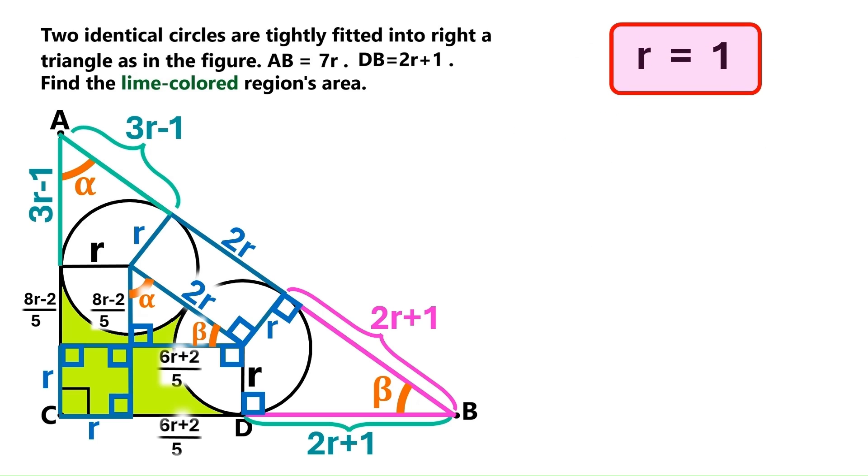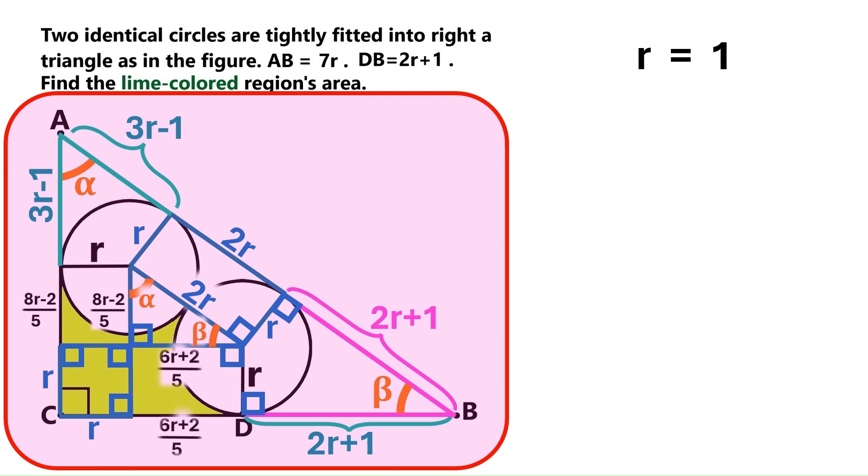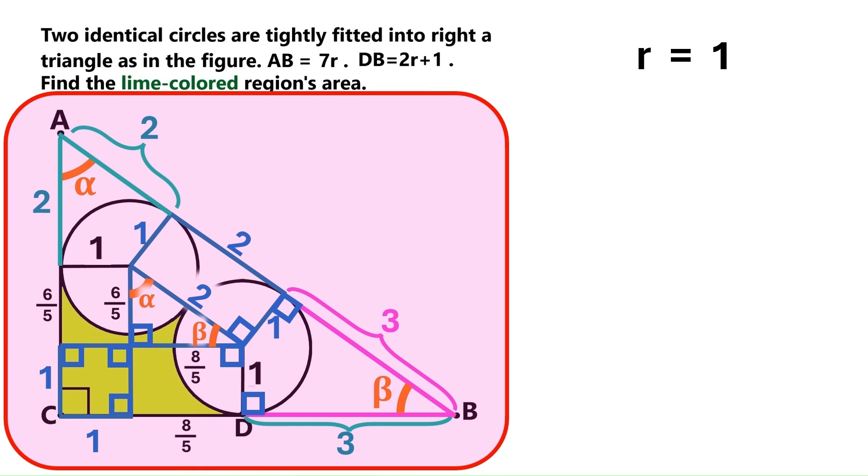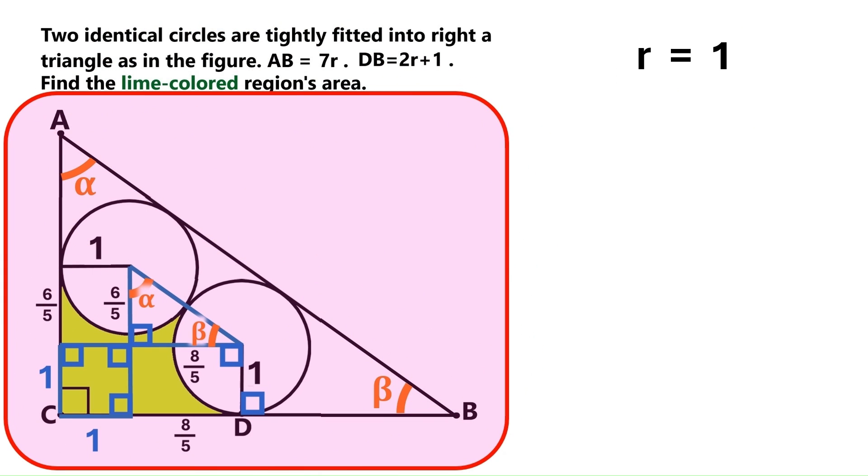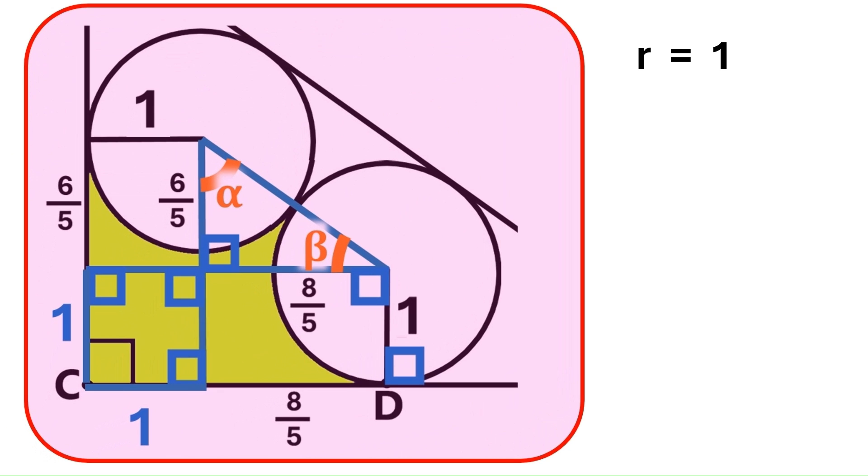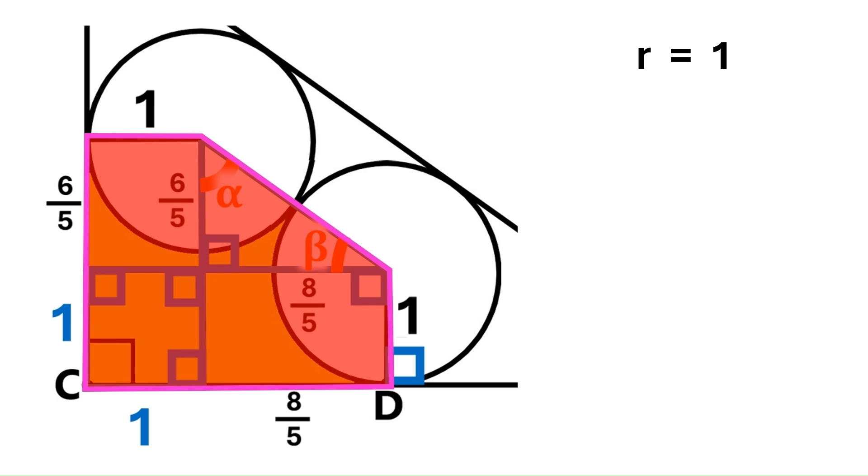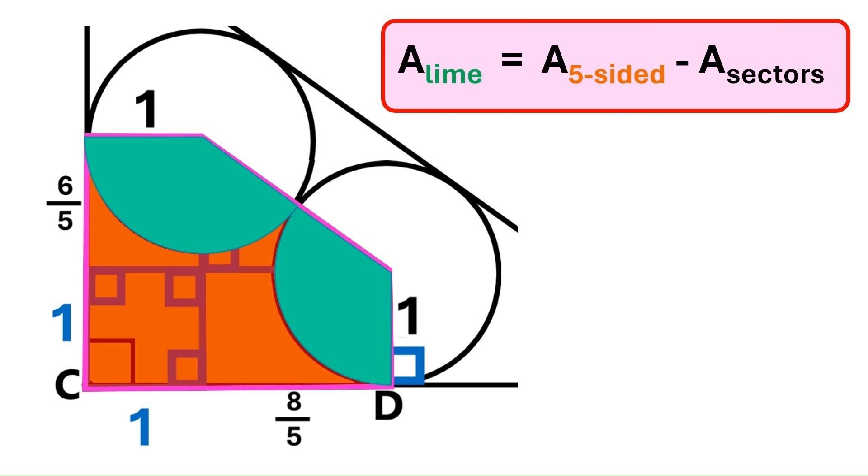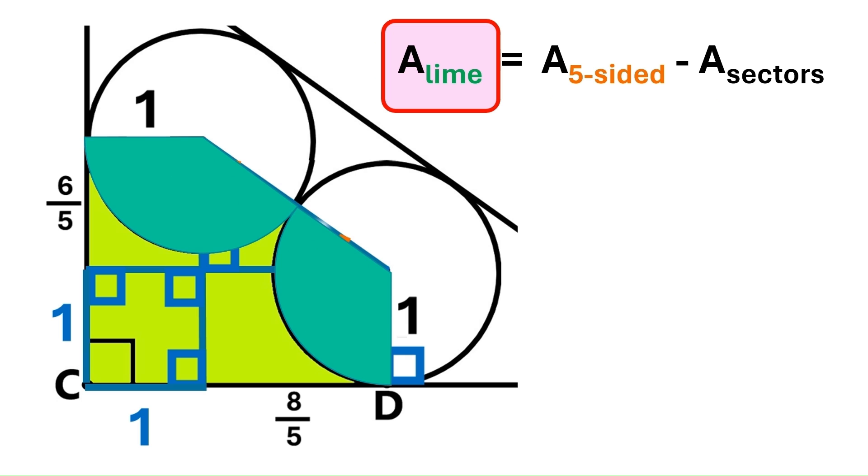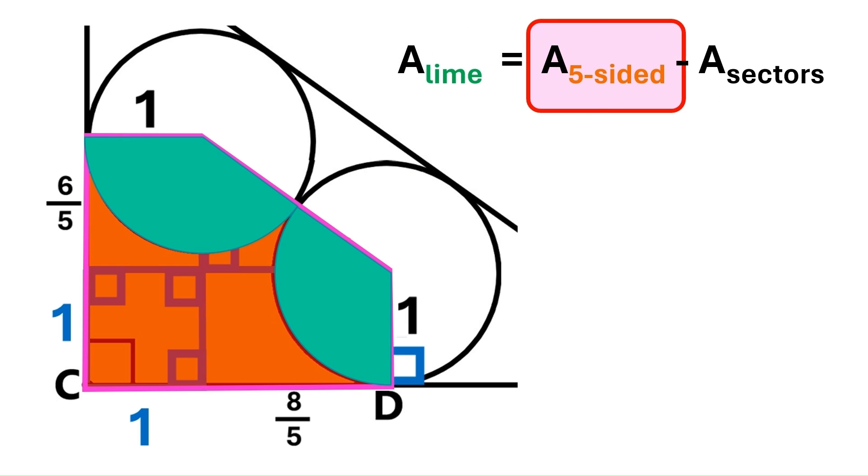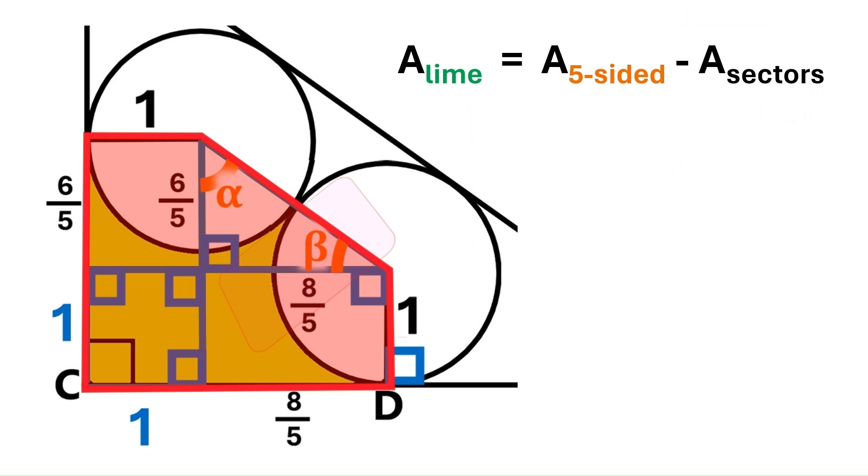Let's keep this super important finding up here, and let's replace all the r's with numerical values, and let's delete the stuff we don't need anymore. Now, I'll take this part and zoom in so that you can see everything clearly. This is the area we need to find, and to do that, we must find the area of this five-sided shape, and then remove these two circle sectors. We can put that as an equation like this. Area lime is the lime colored area we are trying to find. This one is the area of the five-sided shape, and this is the combined area of the two circle sectors. Now, let's start with the five-sided shape.